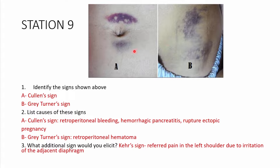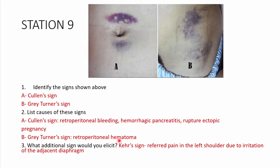Station 9: Identify the signs shown in images A and B. Part A is the Cullen's sign and part B is the Grey Turner's sign. List conditions these signs are seen in: Cullen's sign is seen in retroperitoneal bleeding, hemorrhagic pancreatitis, and ruptured ectopic pregnancies. Grey Turner's sign is seen in a retroperitoneal hematoma. An additional sign to elicit is the Kehr's sign — referred pain in the left shoulder due to irritation of the adjacent diaphragm.